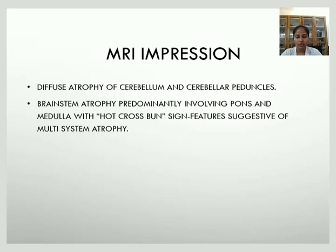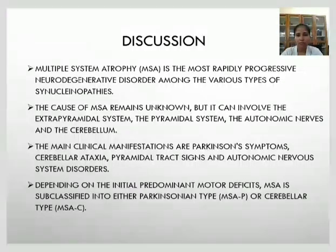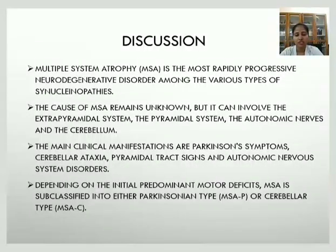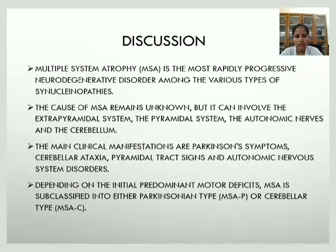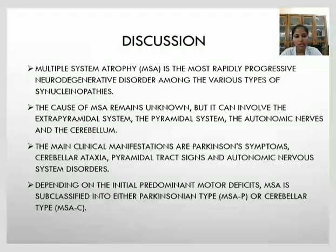Multisystem atrophy is a rapidly progressive neurodegenerative disorder among the various types of synucleinopathies. The cause of MSA remains unknown, but it can involve the extrapyramidal system, the pyramidal system, the autonomic nervous system, and the cerebellum. The main clinical manifestations are parkinsonism, cerebellar ataxia, pyramidal tract signs, and autonomic nervous system disorders. Depending on the predominant motor deficits, MSA is subclassified into the Parkinson's type (MSA-P) and cerebellar type (MSA-C).